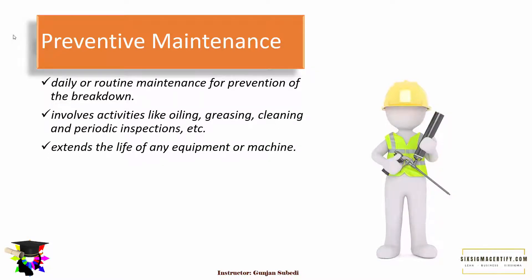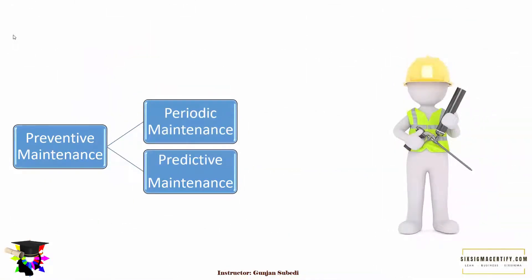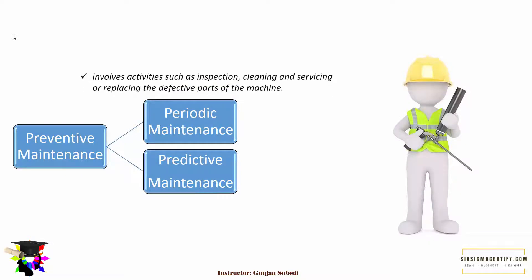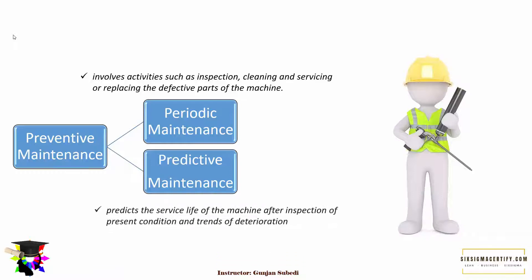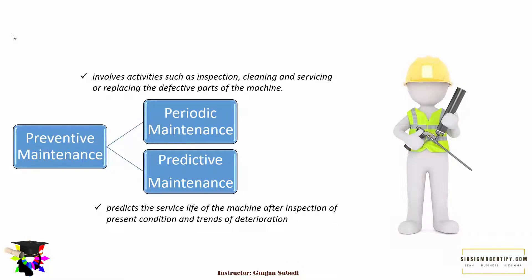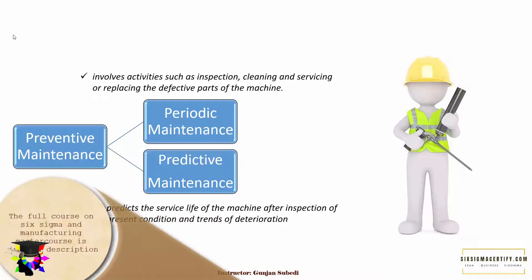There are basically two types of preventive maintenance: periodic maintenance and predictive preventive maintenance. Periodic or time-based maintenance involves activities such as inspection, cleaning, and servicing or replacing the defective parts of the machine. Predictive maintenance, on the other hand, is a condition-based maintenance in which we predict the service life of the machine after inspecting its present condition and trends of deterioration, and it also employs a surveillance system to monitor machine condition.